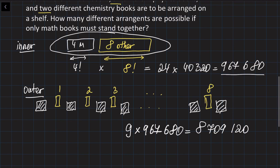So if all the math books should stand together, you are going to have almost 9 million cases of rearrangements. That's it.